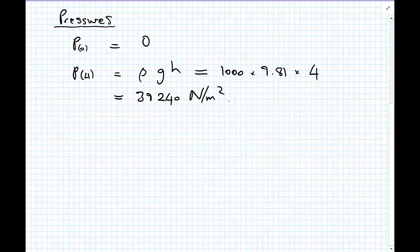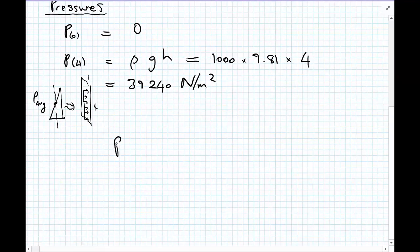From these two values of the pressure, we remind ourselves we have a triangular distribution and therefore we can calculate a value here, which is the average pressure exerted on the wall. And therefore we can consider that we have this pressure acting on this area, so 4 meters and 1 meter.